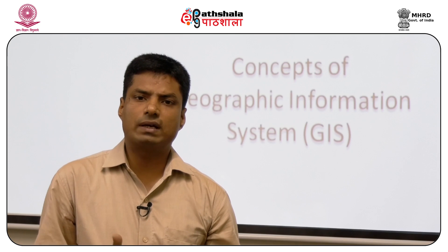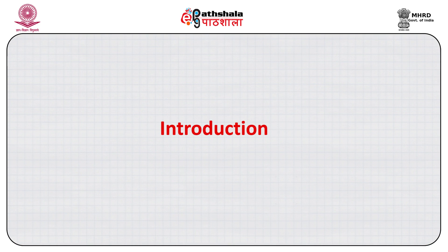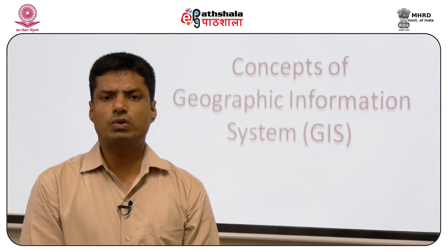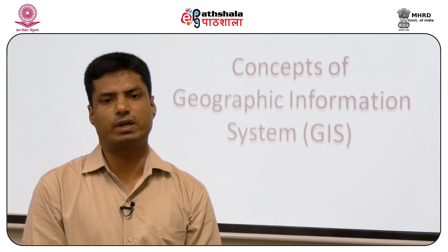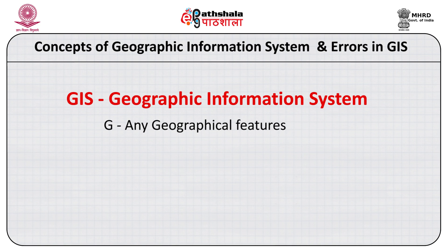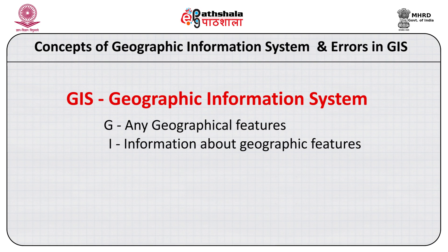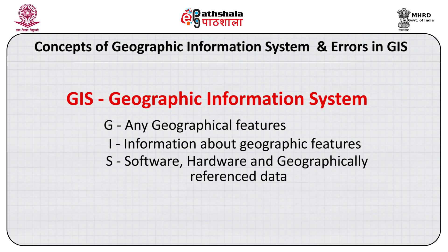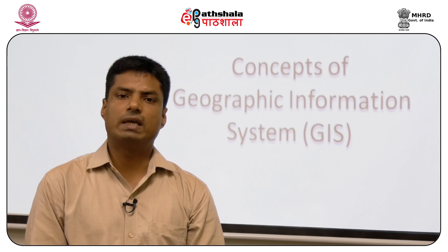Let us see what is geographical information system. Basically, geographical information system consists of three words: geographical, information, and system. The G stands for the relief features or features found on the surface of earth in relation to each other. I stands for information about these spatial attributes on the surface of earth. And S stands for system — the hardware and software system used in GIS.